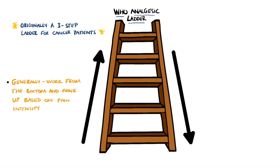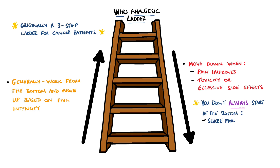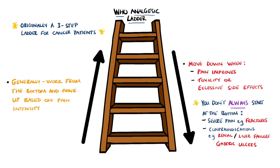If the patient experiences toxicity or severe adverse effects, then you either reduce the dosage or move down the ladder. Note that this doesn't always mean you start from the bottom — it should be tailored to the intensity and consider other factors such as contraindications. In some cases, such as fractures, you may start at the top and work down.